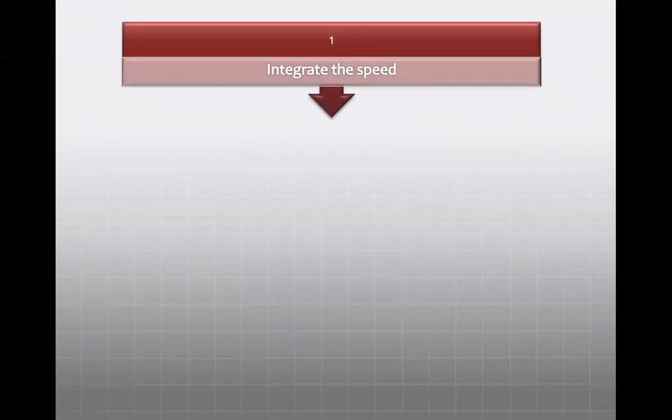So I'm just going to quickly go through what we did. The first step, integrate the speed. Our computer told us that the function on the right, in terms of t, is our integrated function. And as an example, we're going to put just one value in, which is t equal to one, and we get 2.238 out.